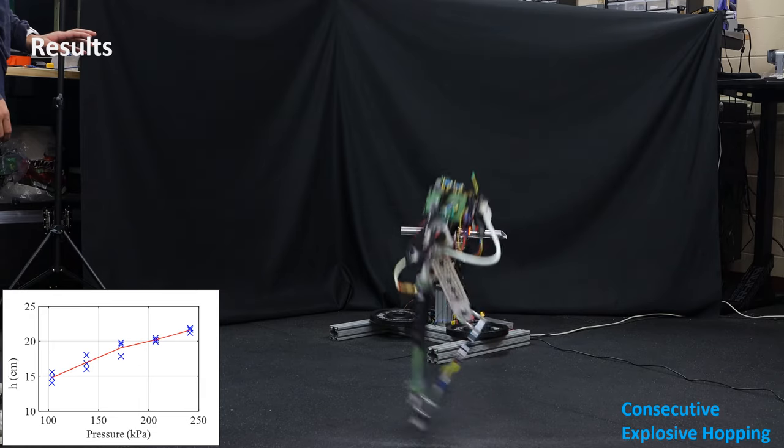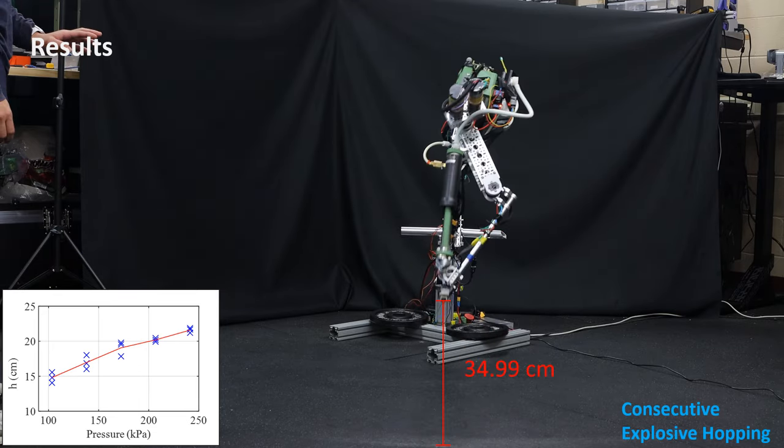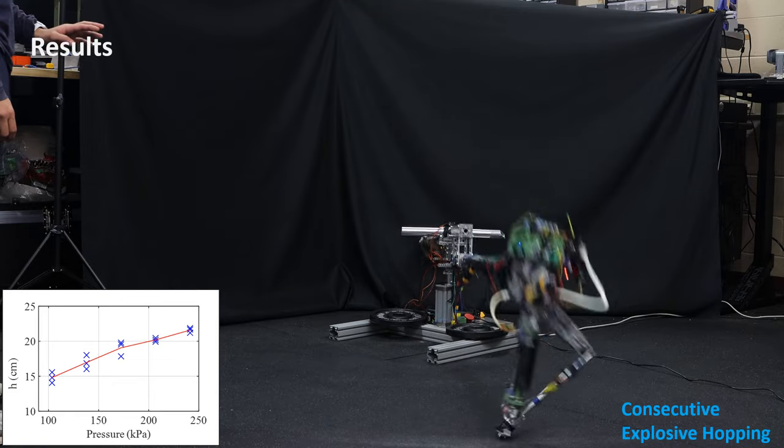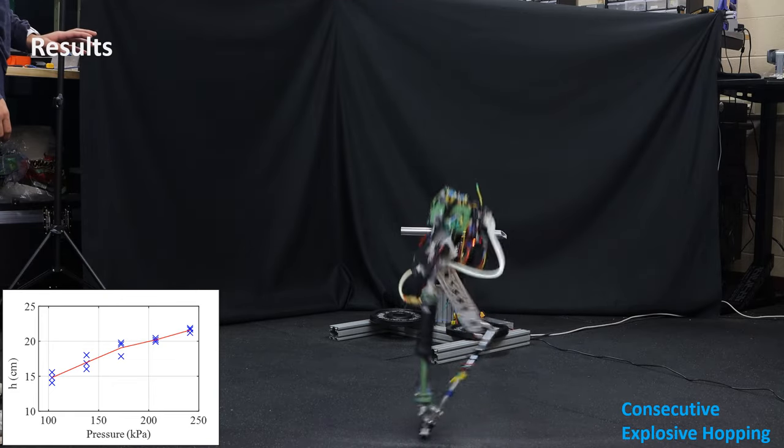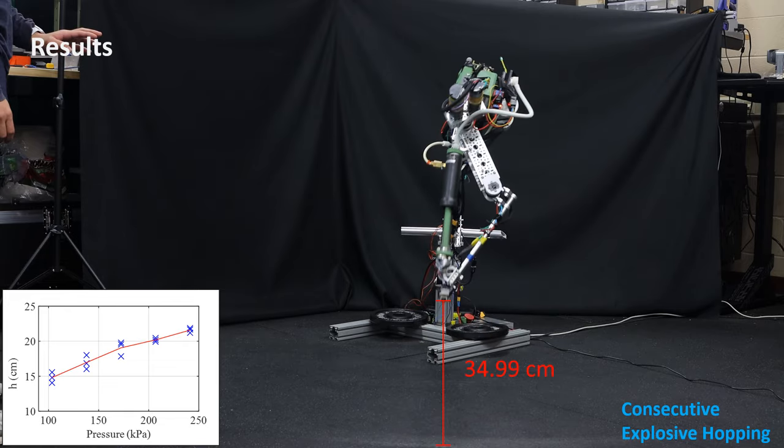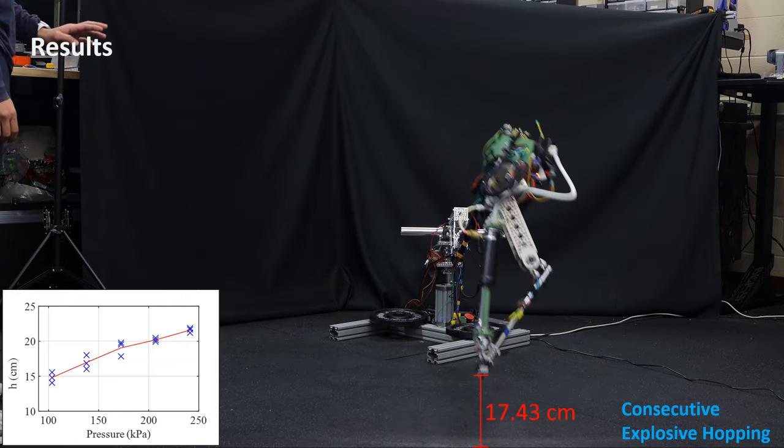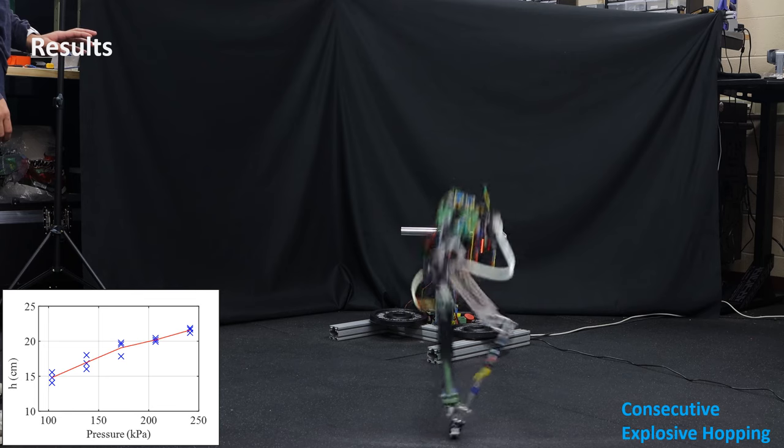The stored energy in the tank is proportional to the air pressure. Thus, the explosive power output is directly related to the increase in the release air pressure. The tank has remaining air pressure after one explosive hop, which can be used to perform a consecutive enhanced hop.